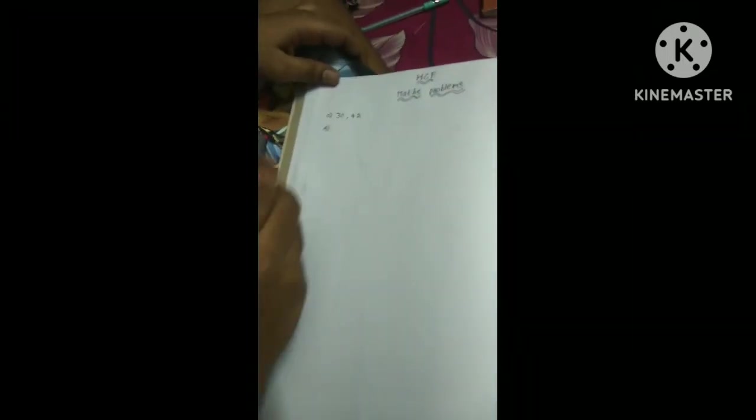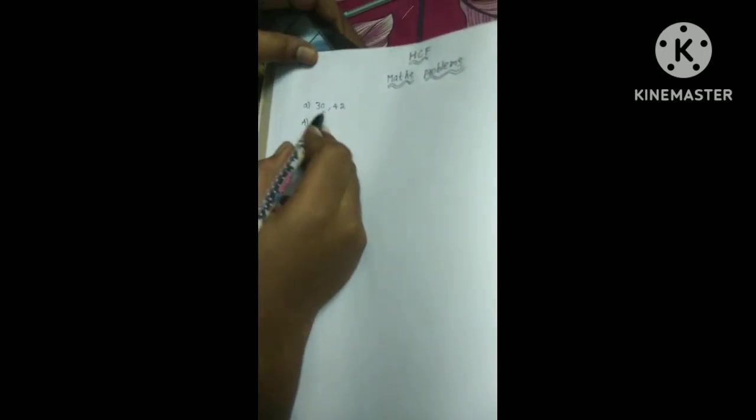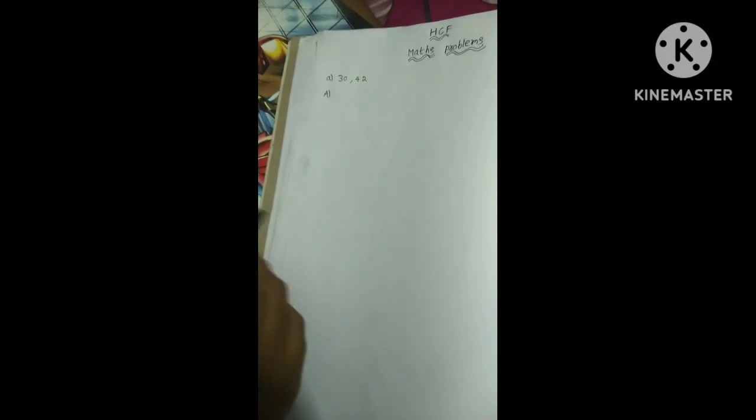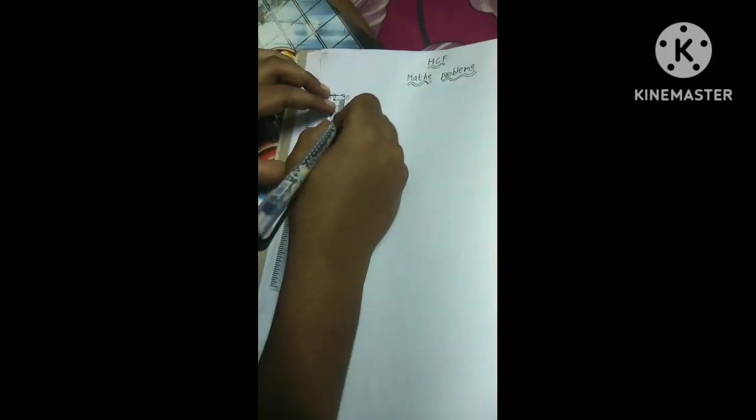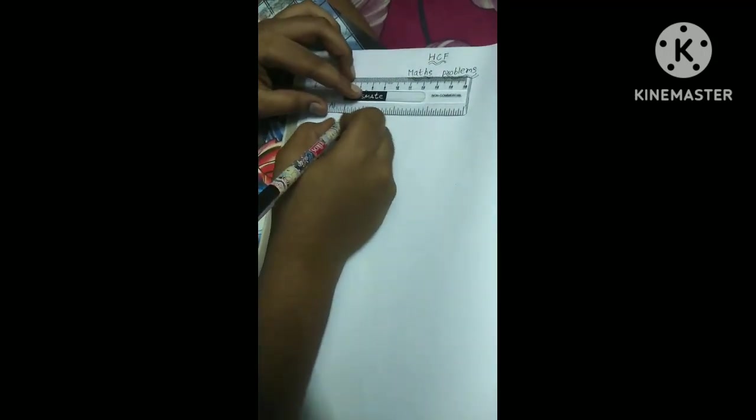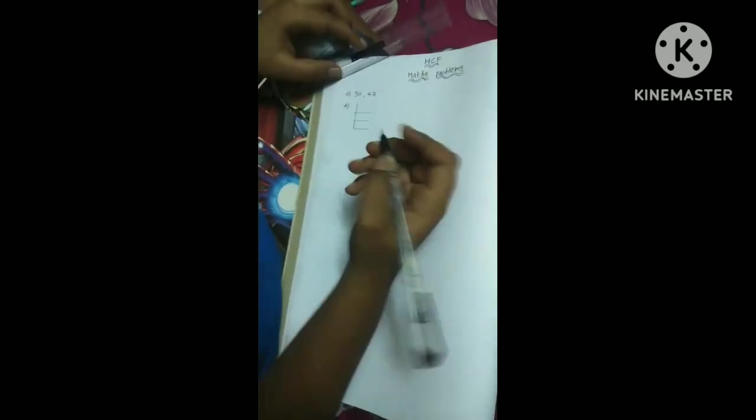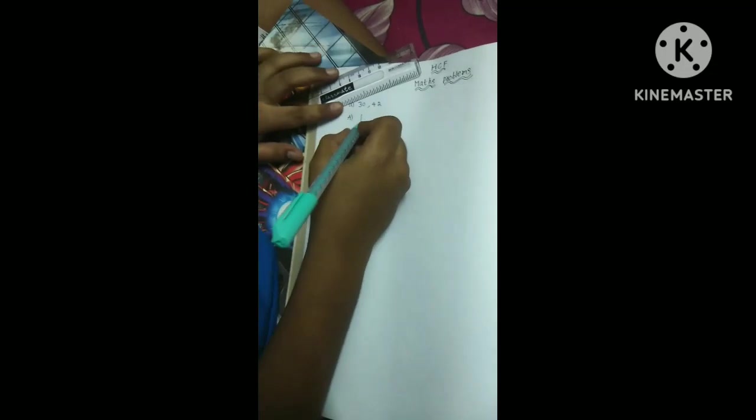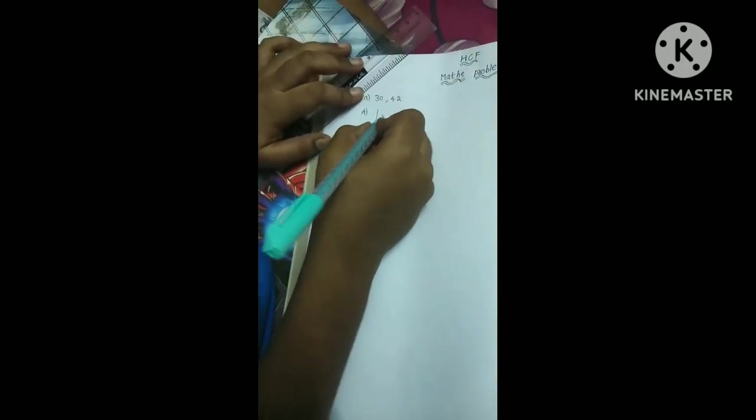Now, this is the question: 30 and 42. Now, let's draw a line. 30 is there. That's why we should write here 30.